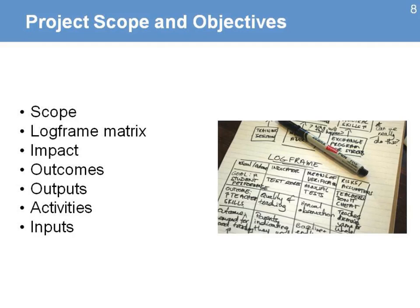The project's scope and objectives is the opportunity to present what is the work of the project. You can even make a copy of the log frame matrix and give it to participants so they will have an understanding of the elements of the impact, the outcomes, outputs, activities, and inputs of the project. It's a good summary for them to have an idea about the project.